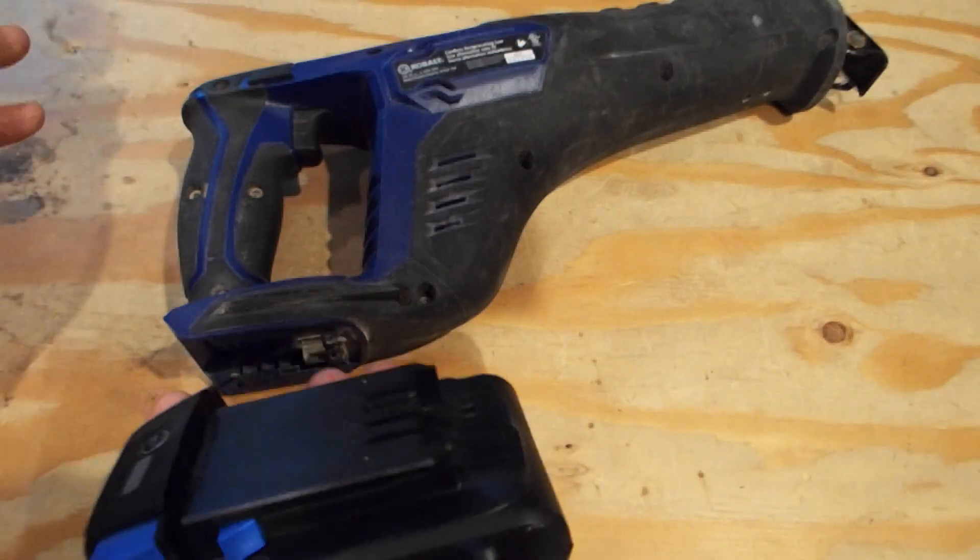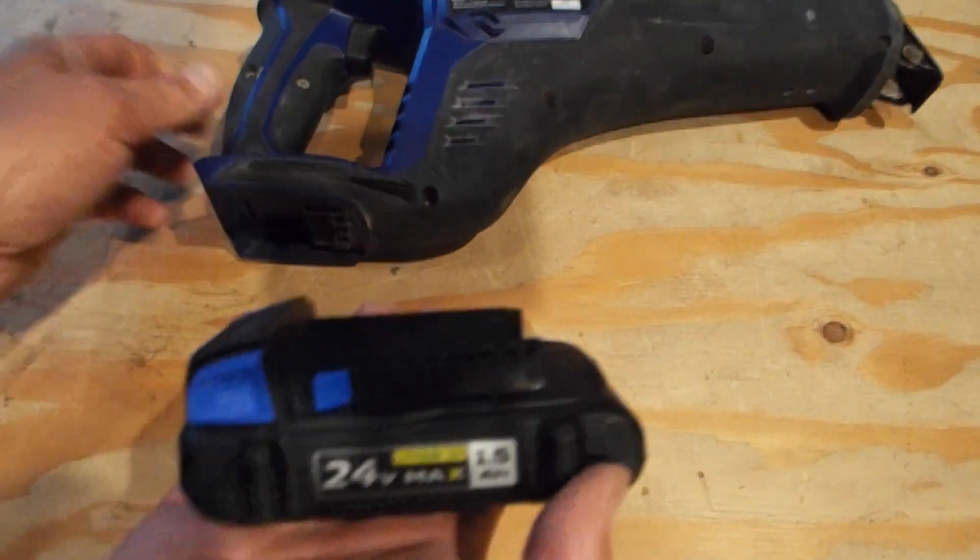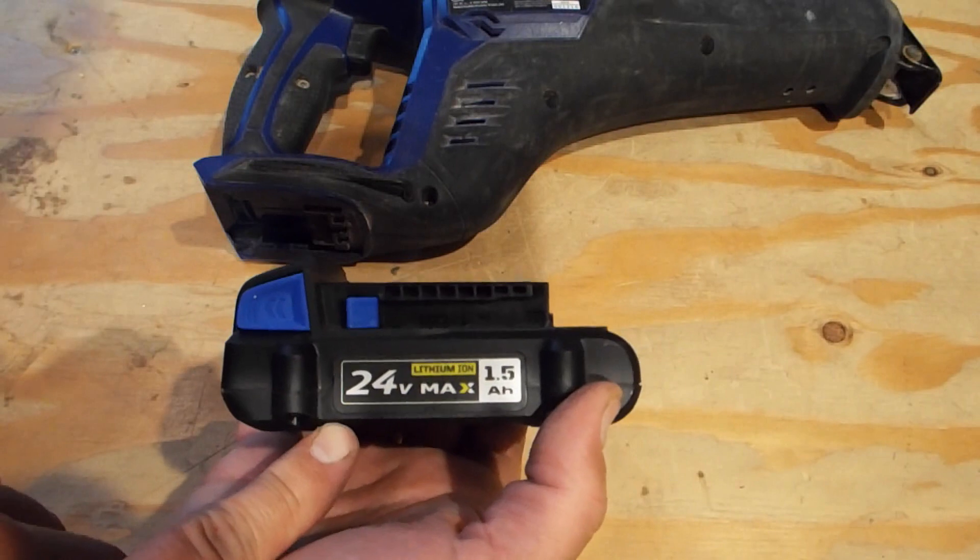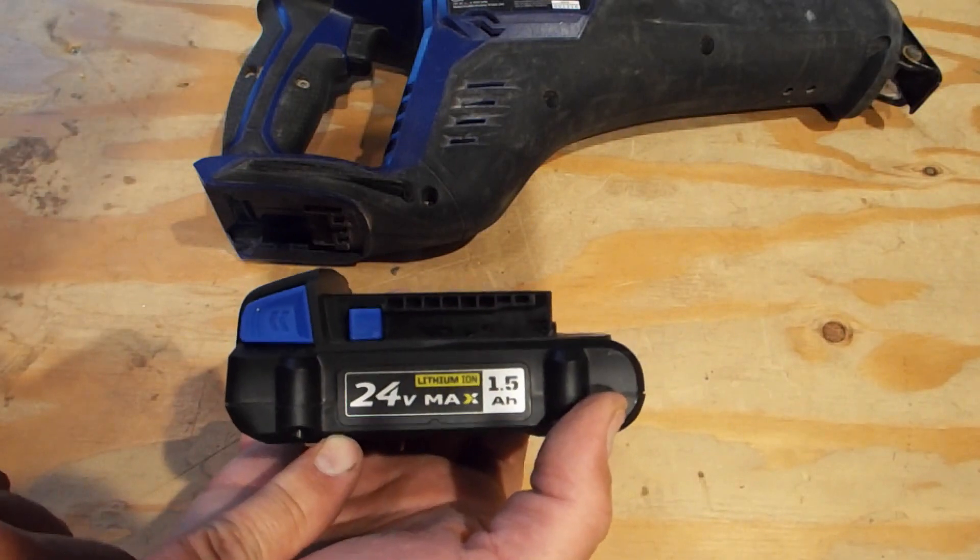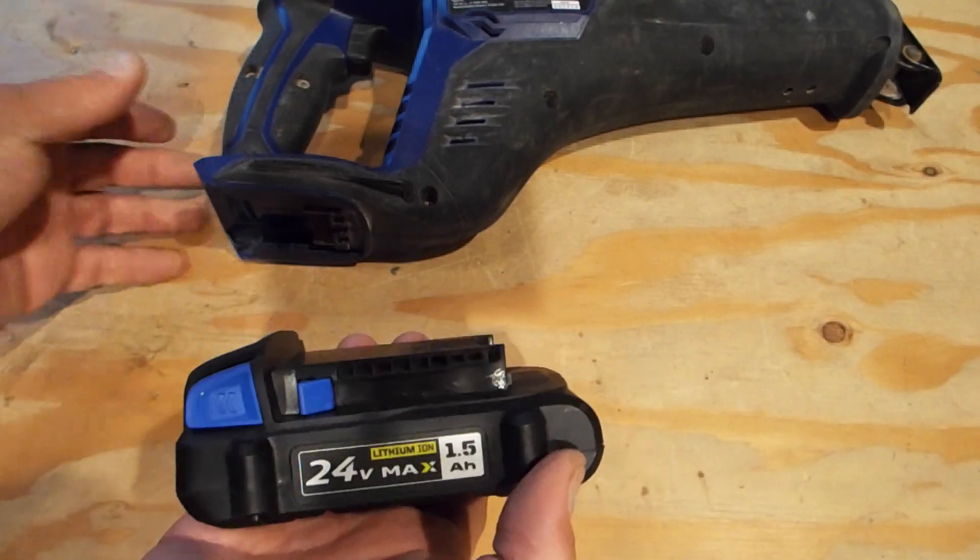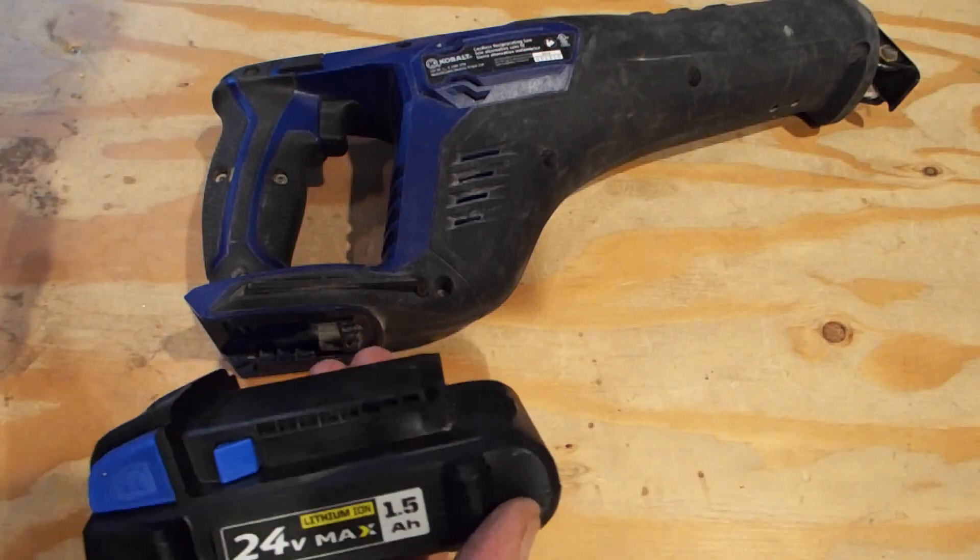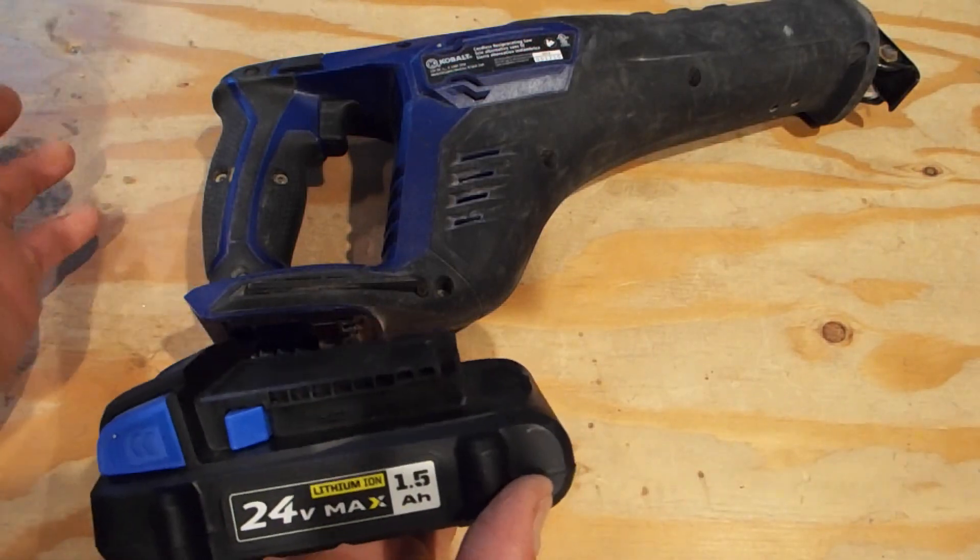No, not really. 18 volt nickel metal hydride batteries run close to 18 volts. Well, 24 volt lithium-ion battery actually only runs around close to 20 volts when it's running. So it's only a 2 volt overage on an 18 volt saw. So it runs just a little bit faster than it should. It's not going to blow it up.